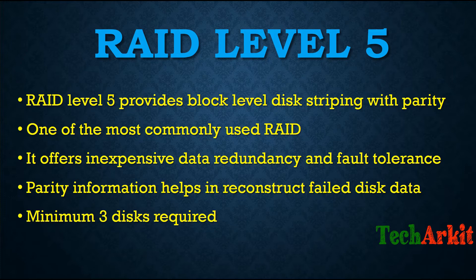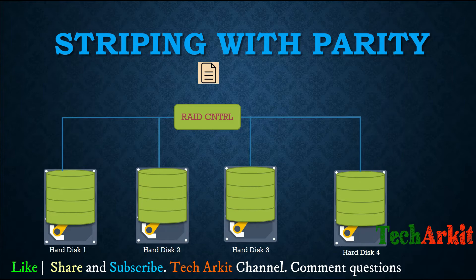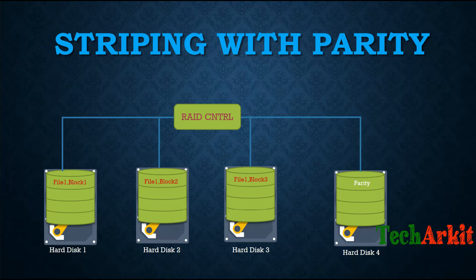When data comes from the RAID controller, it is striped to the hard disks based on blocks. A single file is spread into multiple small blocks — the default block size is 512 bytes. If a file is, say, one MB or a few KB in size, it is split into multiple blocks and written to the hard drives. That is called striping.